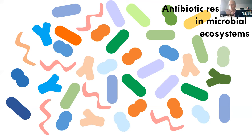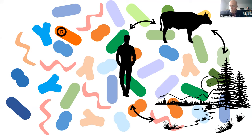We all know that we are being surrounded by bacteria. There are bacteria on our bodies, there are bacteria in the environment, in soil, in water, and of course some of these bacteria will have antibiotic resistance genes, and some of these antibiotic resistance genes will be present on plasmids. And this is the well-known One Health concept: we frequently share bacteria as humans with animals and with the environment, so all of these reservoirs of different microbiomes are interlinked.